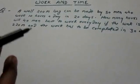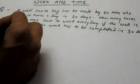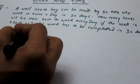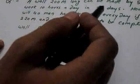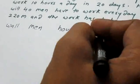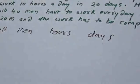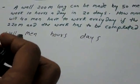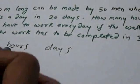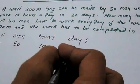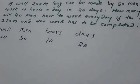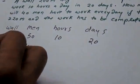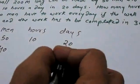What we do — and this is what the trick is all about — we write all the factors involved: wall length, men, hours, and days. Then write the condition 1 components: 200 meter wall, 50 men, 10 hours a day, and 20 days to complete.